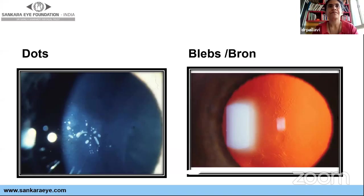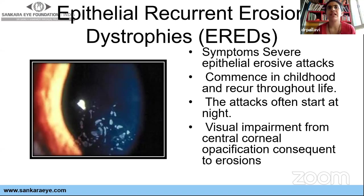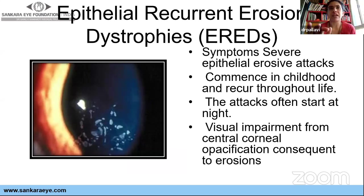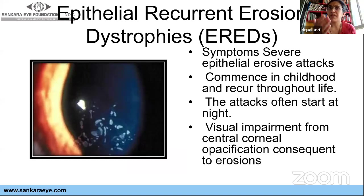Epithelial recurrent erosion dystrophy is different from the common recurrent corneal erosion seen after trauma. These are patients — often children — who never give a history of injury but present with excruciating pain and watering. It is an inherited condition called epithelial recurrent erosion dystrophy. Attacks occur in early childhood, last one to seven days, and recur repeatedly. These patients will progressively develop vision impairment and eventually develop opacity — a very severe form of dystrophic erosions.